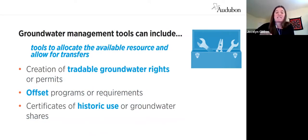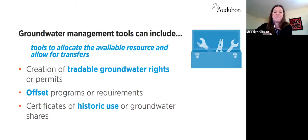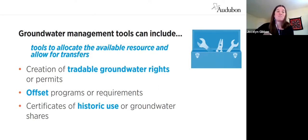The basis of most successful groundwater management has been the adoption of tools to allocate the available resource and then allow for voluntary transfers when there is a new or changed use. In most western states you must have a groundwater right to use groundwater, and there are other variations on this theme, such as requirements that the impacts of new water uses be offset.